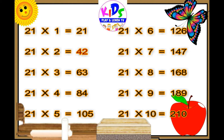21 fives are 105, 21 sixes are 126, 21 sevens are 147, 21 eights are 168, 21 nines are 189, 21 tens are 210.